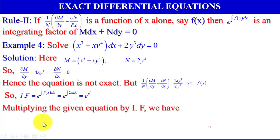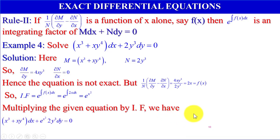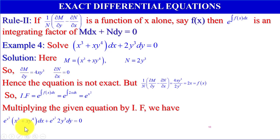Multiplying the given equation by the integrating factor e to the power x squared, we have e to the power x squared times (x cubed plus x y to the power 4) dx plus e to the power x squared times 2y cubed dy equals 0.